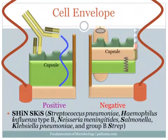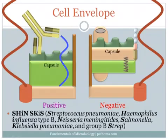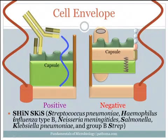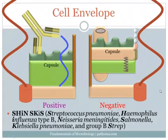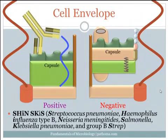Several organisms are known to possess capsules, remembered by the acronym SHINSKI: Streptococcus pneumoniae, Haemophilus influenzae type B, Neisseria meningitidis, Salmonella, Klebsiella pneumoniae, and group B strep. You should definitely remember that these possess capsules — we'll talk about them in more detail in the future. In this lecture we discussed what's on the outside of bacteria. In the next lecture we'll talk about what's on the inside.